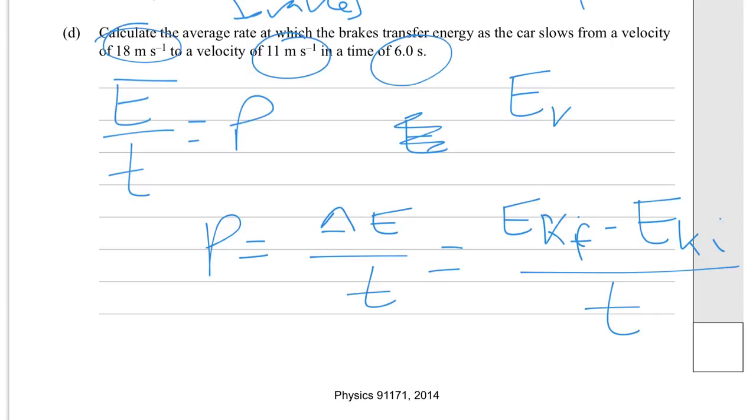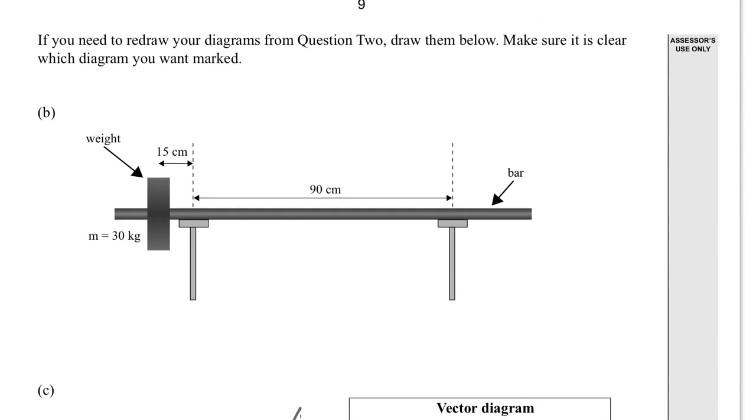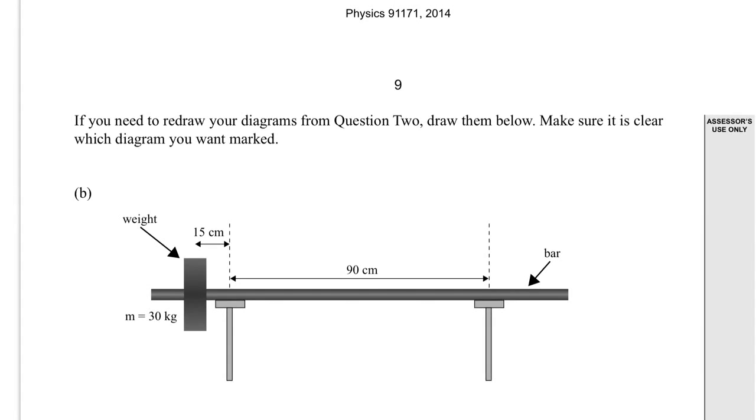So kinetic energy, half mv squared. You do that twice for, you've got the mass, 1,100 kilograms, and each of those two velocities, 11 and 18. You do those calculations, put them into each of those positions, get a change in energy, and then just put in the time. That will give you the power, which is the average rate at which the brakes are transferring energy. Assuming all of that energy from the kinetic energy is going into the heat and the brakes. And now I think we're done.